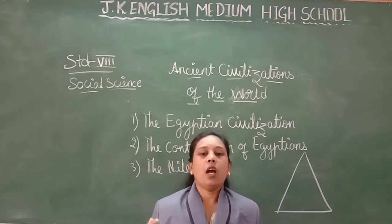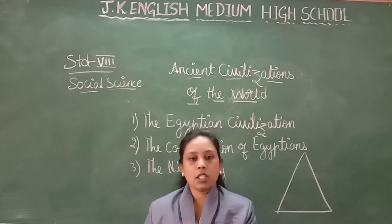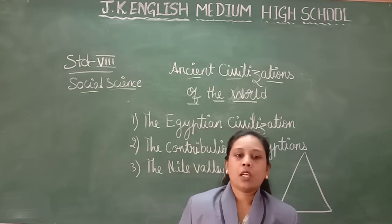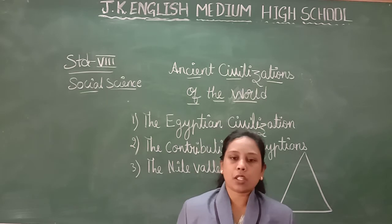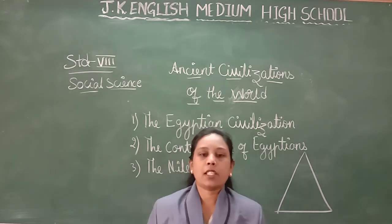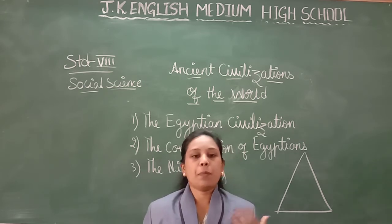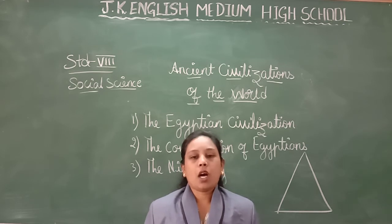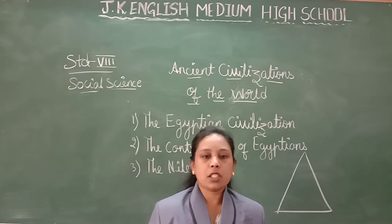And once again Egypt became free. After about a thousand years, it came under the rule of the Assyrians. And the Persian emperor Cambyses occupied Egypt in the 6th century BCE. Then Alexander occupied Egypt in the 4th century BCE. Egypt became a province — a territory — of Macedonia. And one of Alexander's military generals declared himself the king of Egypt and established the dynasty of Ptolemy. He founded the city of Alexandria.